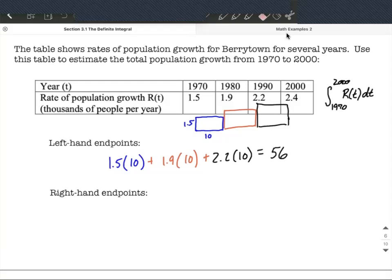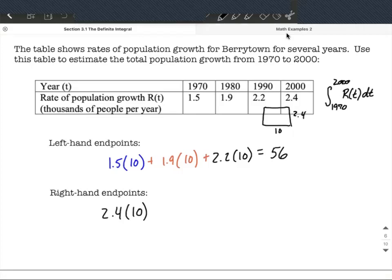For right-hand endpoints, it's the same idea, except a little bit different, that we don't draw these up on the left-hand side. Instead, what I would probably do is go ahead and start at the right-hand side, go up here, and then over to make a rectangle. So that's going to be the calculation 2.4 multiplied by 10. It still has 10 as the width of this rectangle, and 2.4 is the height of that rectangle.